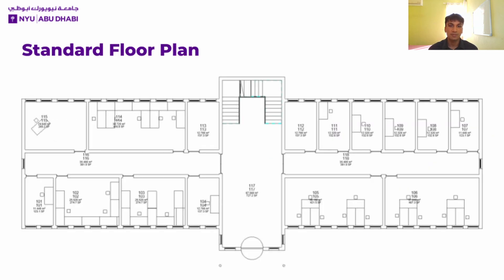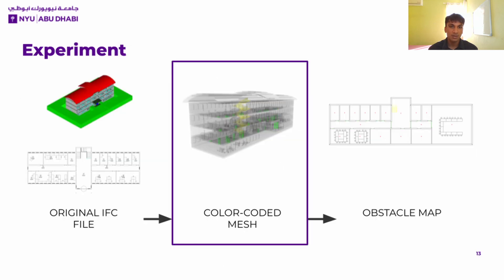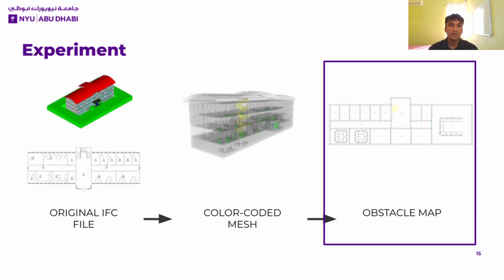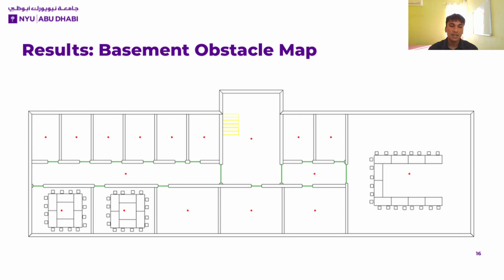This is the standard floor plan of the ground floor extracted using Revit, and as you can see, it contains no semantic information and has limited functionality for autonomous systems. Next, we generated the unified color-coded mesh that represents the entire building. As you can see, we have the doors and stairs properly color-coded throughout the model, with the doors in green and the stairs in yellow. Finally, using that unified mesh, we are able to obtain our obstacle map by taking slices from it. This is an example of an obstacle map representing the basement of the building — we can see the doors colored in green, stairs in yellow, and solid obstacles in black, effectively adding semantic information to the map. We also have the centroids plotted in red at the center of each space, and they can be used as waypoints for certain applications.